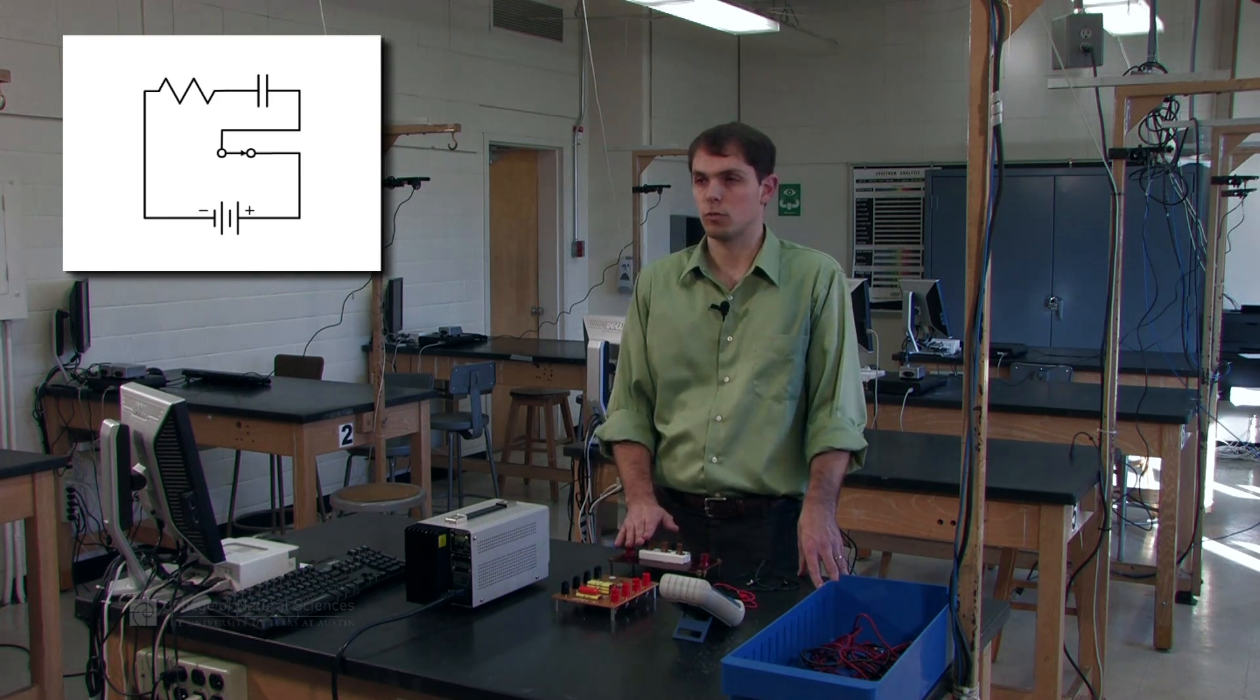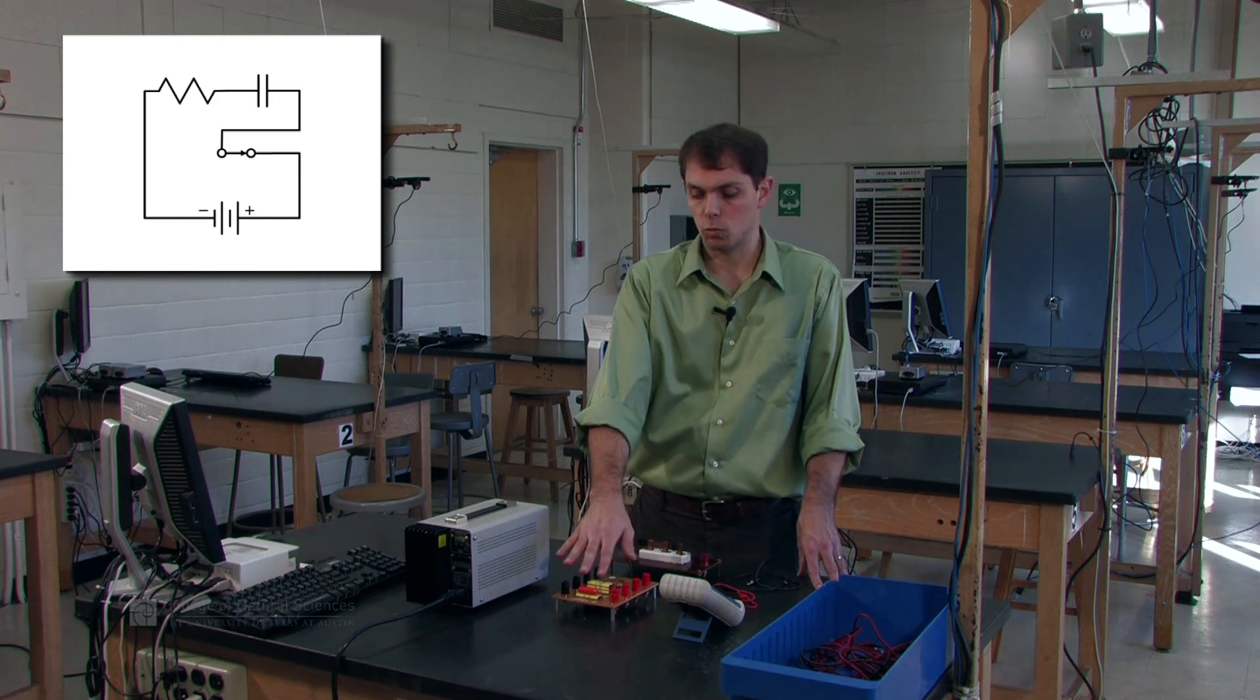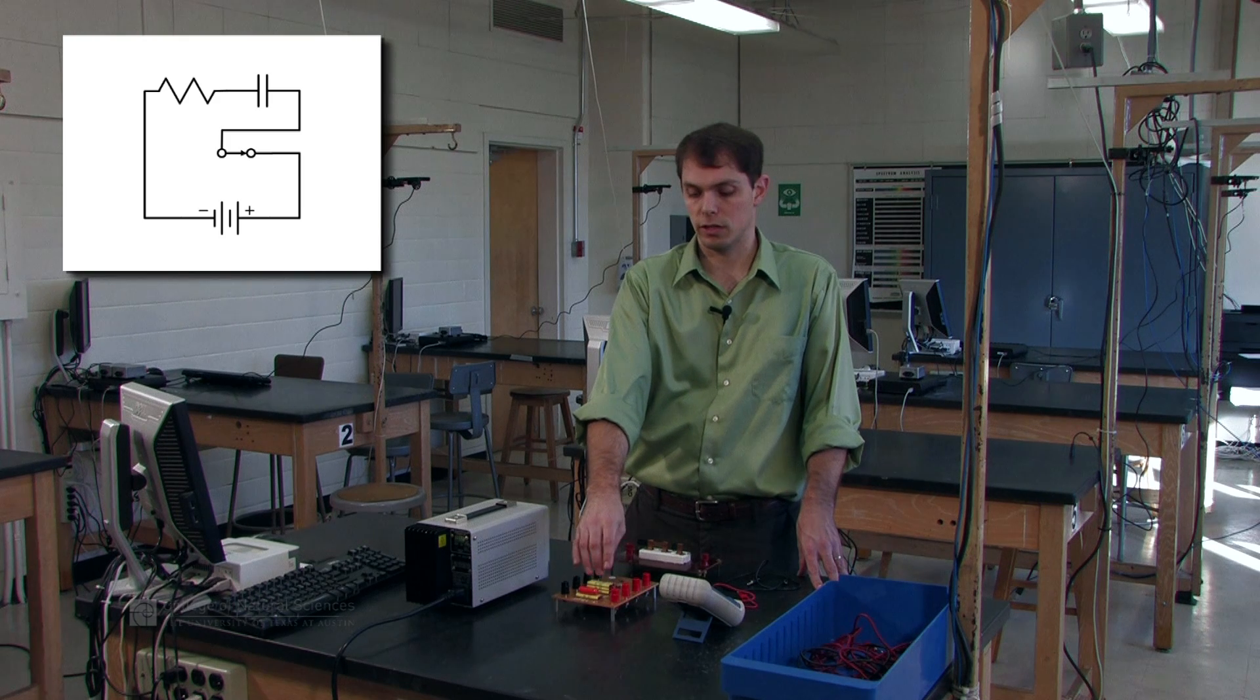Afterwards we're going to take the switch and switch it to the other side which will remove our voltage source. We'll direct the current or the charge through the resistor thus discharging the capacitor, and again we'll be able to use a measuring device to measure the voltage as a function of time.